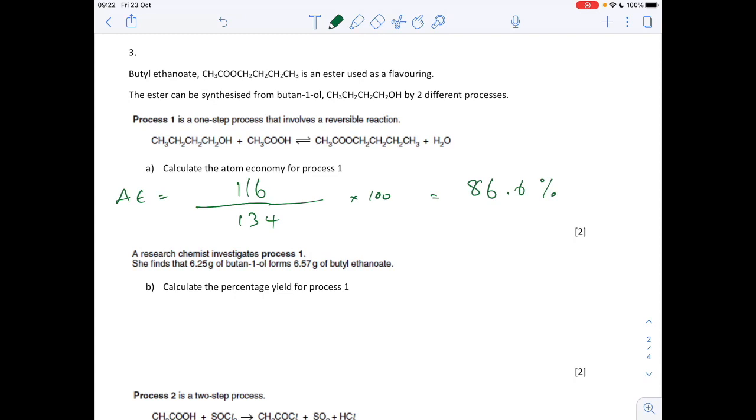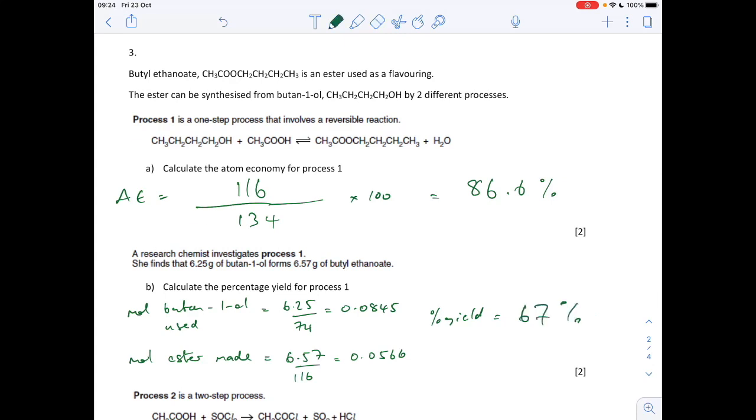Part B we've got to do the percentage yield for process one now. So we've got two masses, mass of butane 1-ol and the mass of ester, the butyl ethanoate that's formed. So we'll turn those into moles first of all. So we get the moles of butane 1-ol used, 0.0845. Moles of ester made, 0.0566. And to calculate the percentage yield, it's actual yield over theoretical yield multiplied by 100. So we've actually made 0.0566 moles of ester. We'd expect to get this many moles of ester because of the 1-to-1 ratio here. And that gives an answer of 67%.